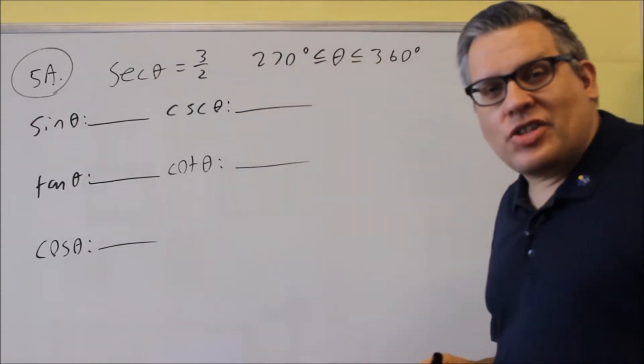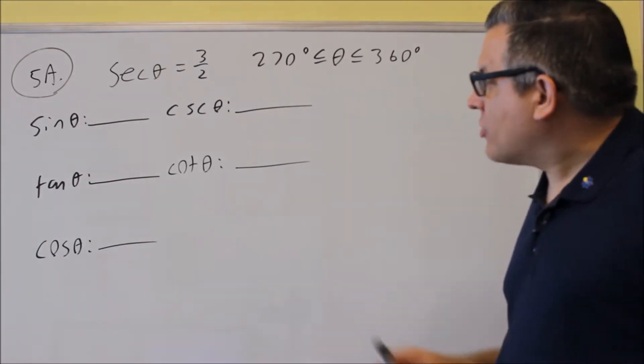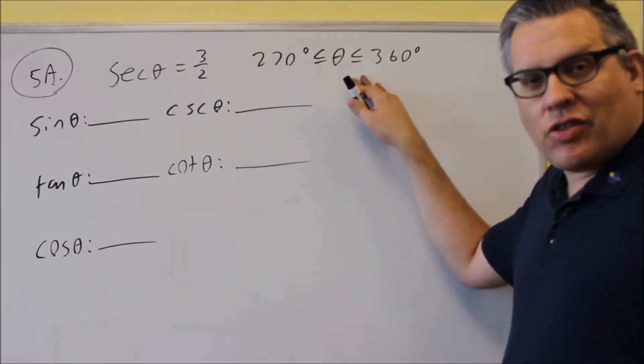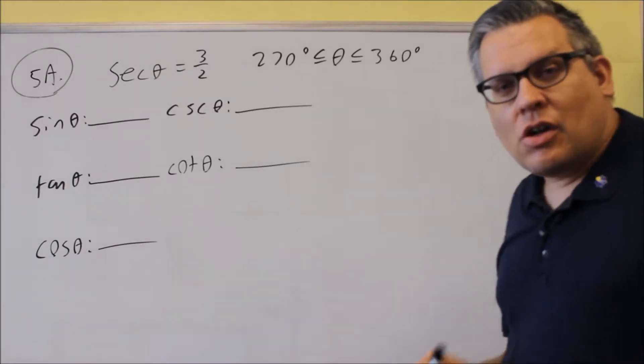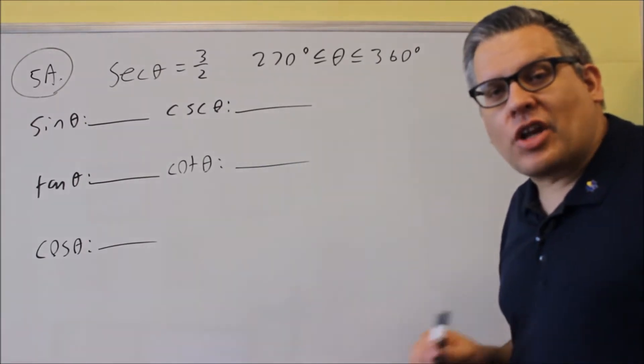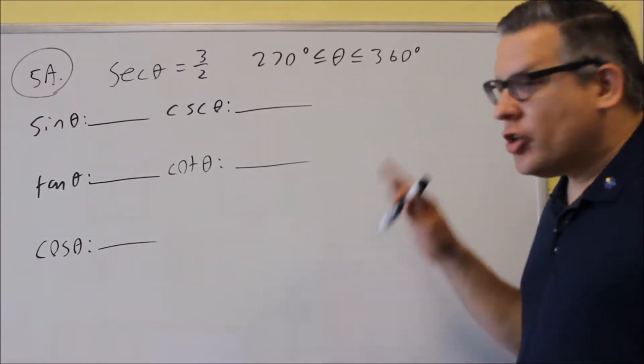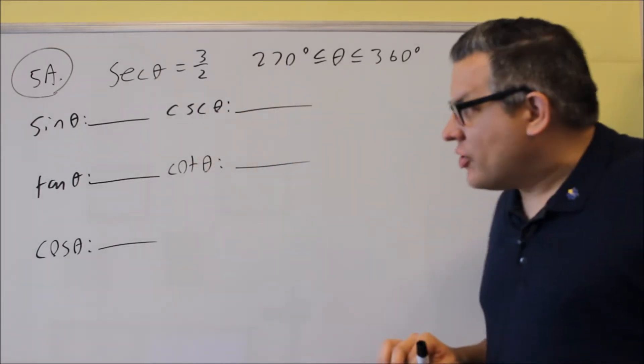It's telling us that secant is equal to three halves, and they're telling us that the theta is between 270 and 360. For these kind of problems, what you want to do is set up a triangle, and we'll use the triangle to fill in all this here.